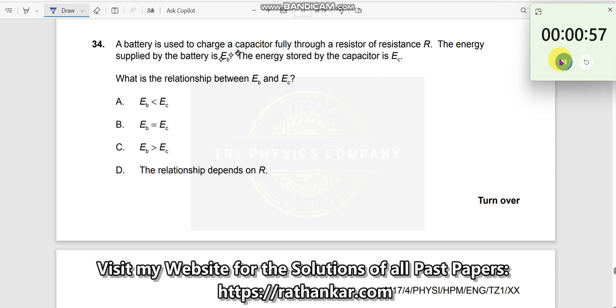Question number 34. A battery is used to charge a capacitor fully through a resistor of resistance R. The energy supplied by the battery is E-B.